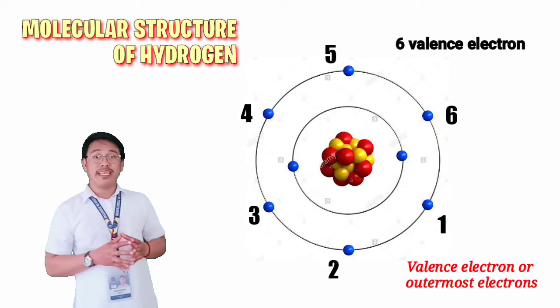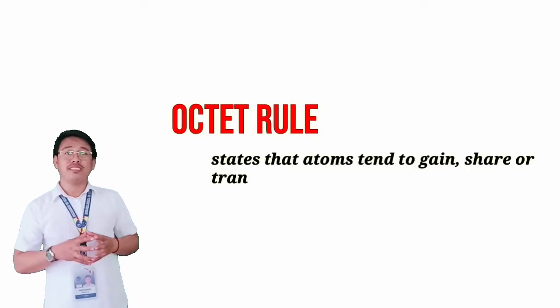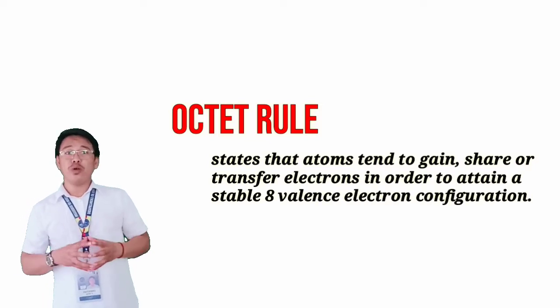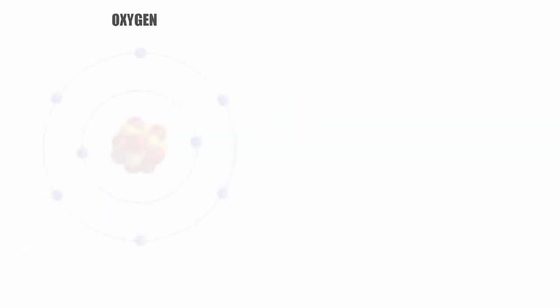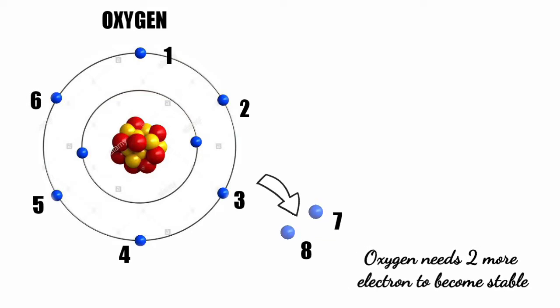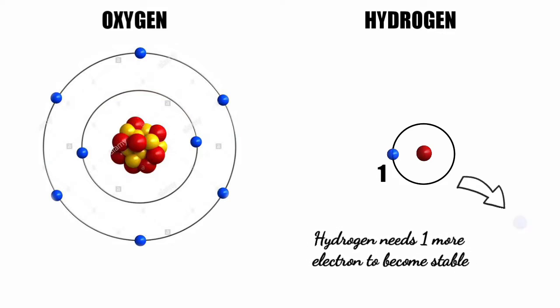We call this the valence electron. As discussed when you were in grade 9, the octet rule states that atoms tend to gain, share, or transfer electrons in order to attain a complete set of valence electron configuration. Therefore, oxygen needs two more electrons to become stable. Hydrogen, however, is an exception to the rule since it has only one electron in its shell. To become stable, hydrogen needs one more electron.